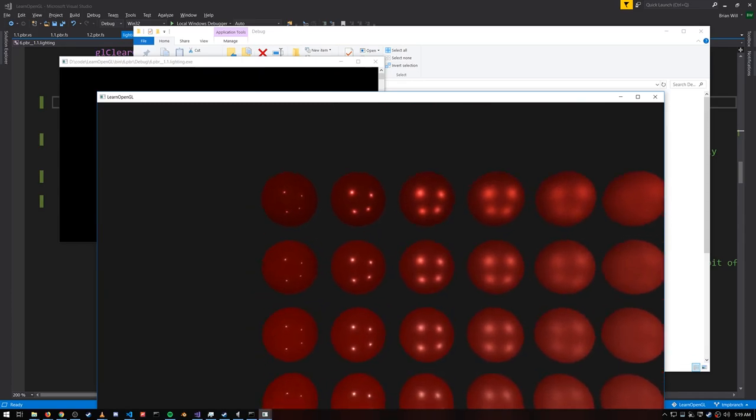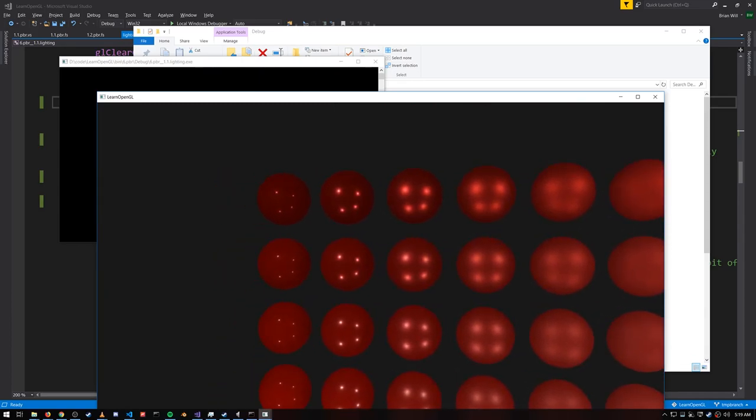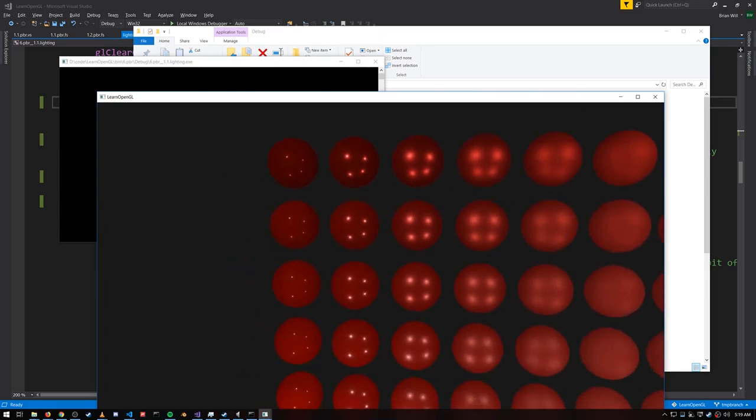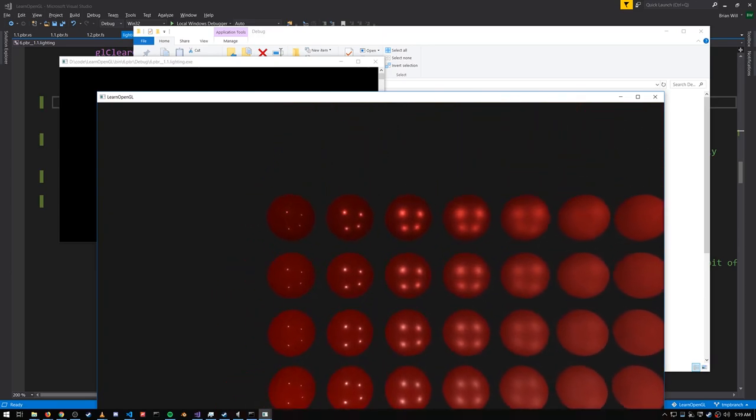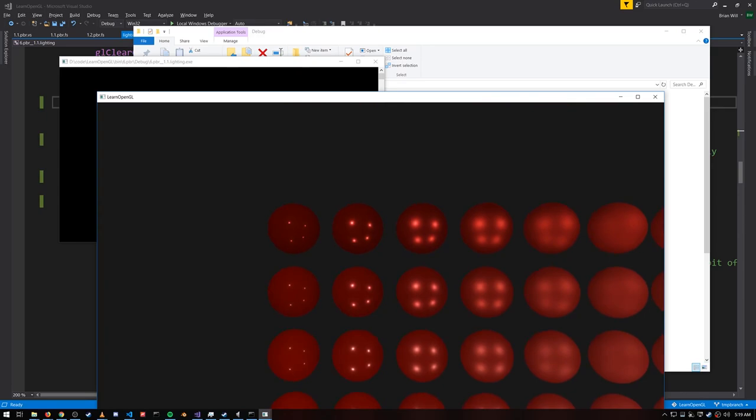But more noticeable about the metalness is that they have less diffuse reflection. So outside the specular highlight, they're just getting darker, they're not as intensely red. Because that's how metals behave. The light energy that absorbs into the metal, unlike with non-metal materials, tends not to escape.